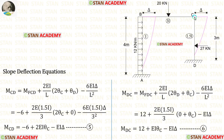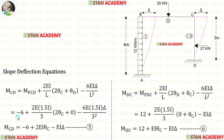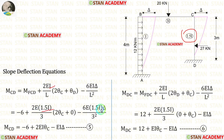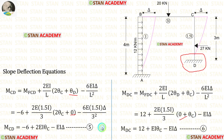Now let us make the slope deflection equations for column CD. Since column CD is subjected to sway, we have to add the movements due to sway with the equations. Let us apply the fixed end moments. The length of column CD is 3 meters. The moment of inertia for CD is 1.5i, so instead of i we have to apply 1.5i. At point D there is a fixed support, so theta D will be 0. Finally, in column CD we have made two equations.